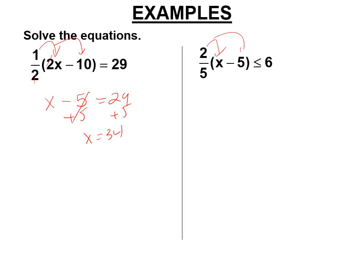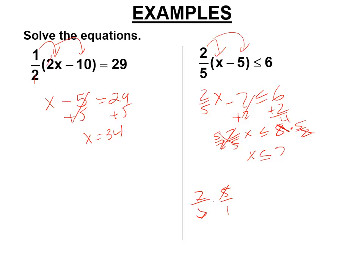Distribute a 2.5 here. 2.5x. 2.5 times 5. 2.5 times 5 is 2. This is minus 2. Add 2 to both sides. 2.5x is less than or equal to 8. Multiply both sides by the reciprocal of 2.5, 5 halves. 2 cancels with the 8. And x is less than or equal to 20.